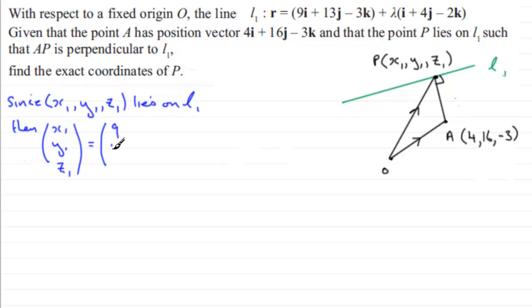plus lambda in the direction of 1, 4, minus 2. Remember that's the direction vector for the line. In fact, it's well worth us putting it in. That's the direction vector, the vector i plus 4j minus 2k. We're going to need that part later on as well.